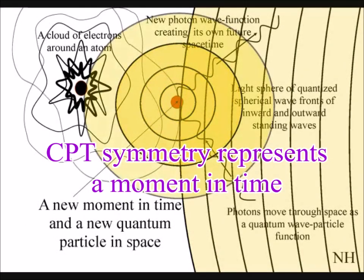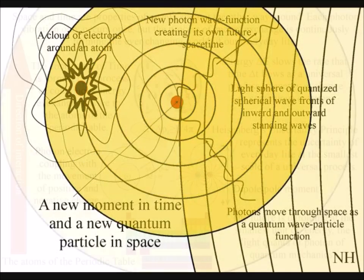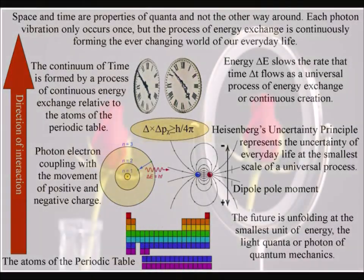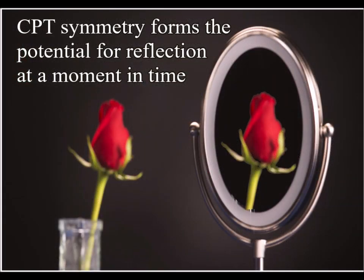Over a period of time the symmetry is broken and we have the dominance of matter over antimatter. But at each photon electron coupling or dipole moment we have symmetry between positive and negative charge and mirror symmetry or what is called parity.